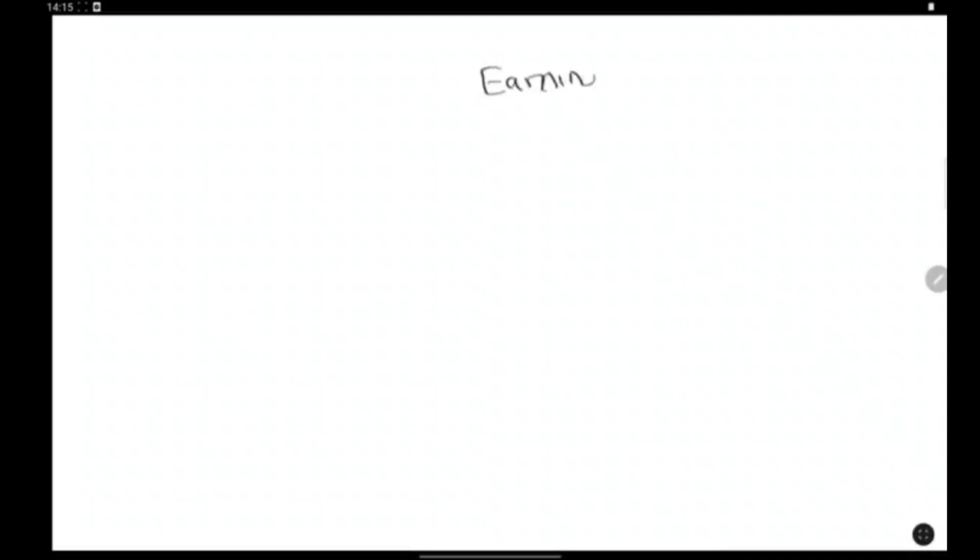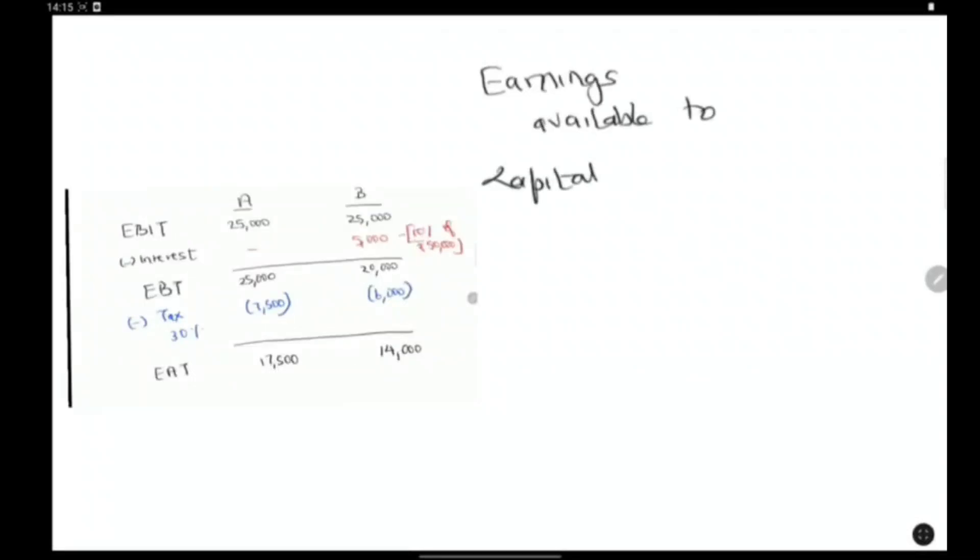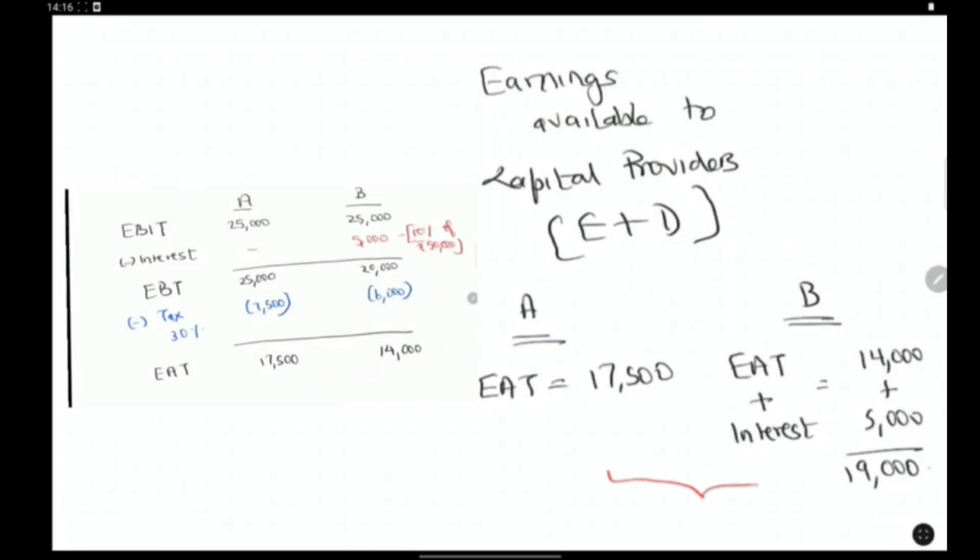Another way to understand this is to look at the earnings available to the capital providers. In the case of A, it is just the earnings after tax which is rupees 17,500. But for B, it is the earnings after tax plus the interest which is 14,000 plus 5,000 which is 19,000. This additional 1,500 is nothing but the benefit gained due to interest being tax deductible which is called the tax shield.